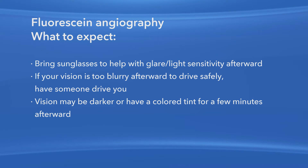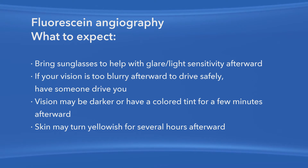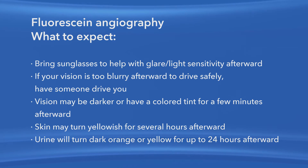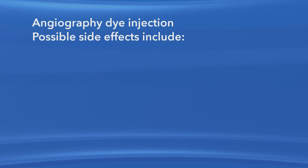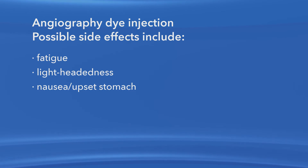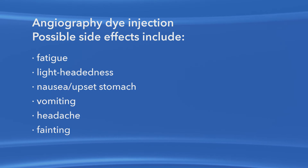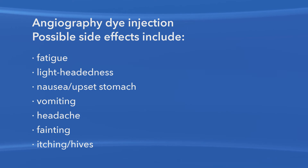After the fluorescein dye is injected, your skin may turn yellowish for several hours. Also, because your kidneys remove the dye from your body, your urine will turn dark orange or yellow for up to 24 hours following the test. Some people may feel tired, lightheaded, or nauseous after having the dye injected. Also possible are vomiting, headache, fainting, itching, or hives. Alert your ophthalmologist if you experience any of these side effects.